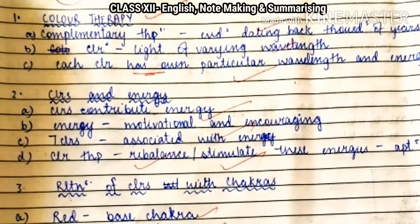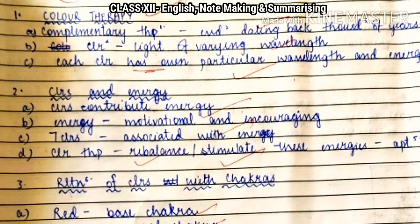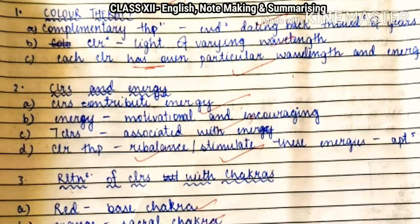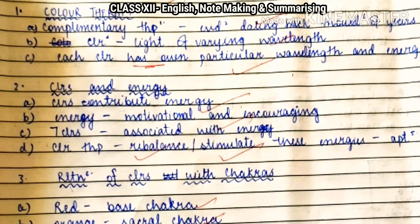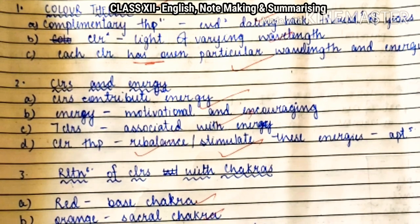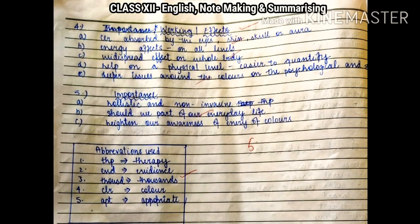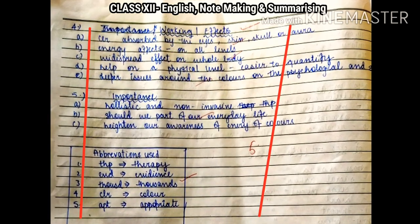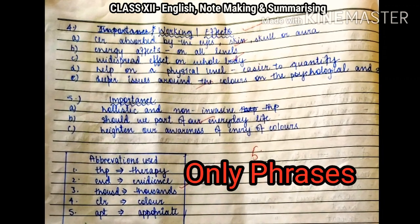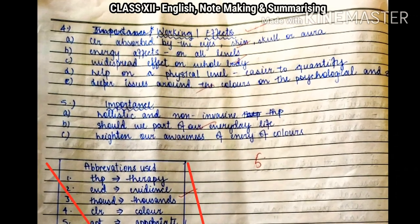The second sub-heading is 'colors and energy.' Sub-points: colors contribute energy; then point B — energy, motivational and encouraging; then seven colors, with the word 'colors' abbreviated, associated with energy; then sub-point D — color therapy: rebalance and stimulate these energies, appropriate for the body. You can have a look at all these points and sub-points which have been done very precisely. No articles, conjunctions, or prepositions are used — only phrases are used, abbreviations given, and a key to abbreviations is provided.